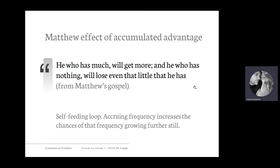The idea is that once one variant becomes slightly more frequent than the other, this asymmetry will only become more severe or stronger. Once one variant becomes more frequent, it is then heard more often by more people, and in the minds of those people, this variant becomes more psychologically entrenched, which further increases its frequency. We're dealing here with a kind of self-feeding loop, where the accruing frequency of one form increases the chances of that frequency growing further still.